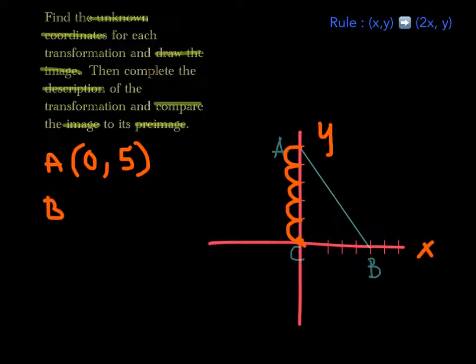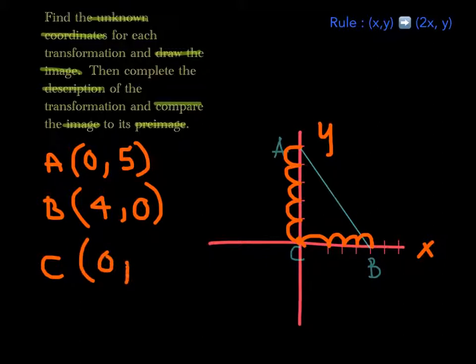And then we're looking for B. The x-axis is one, two, three, four. And the y-axis stays the same as zero. And C. Now C stays the same for both x-axis and y-axis.